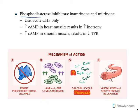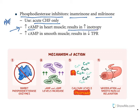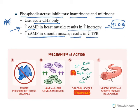Phosphodiesterase inhibitors like inamrinone and milrinone are used to treat acute congestive heart failure. They increase cardiac cyclic AMP by inhibiting the enzyme that metabolizes it, resulting in positive inotropy — increased force of contraction and increased cardiac output. Another important feature: in smooth muscle, increased cyclic AMP causes relaxation and decreases total peripheral resistance, producing vasodilation.